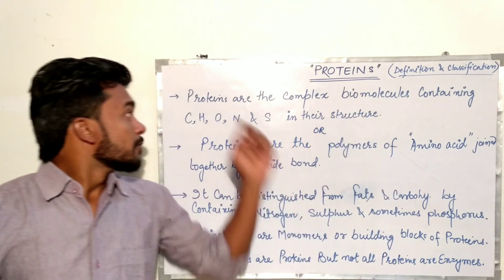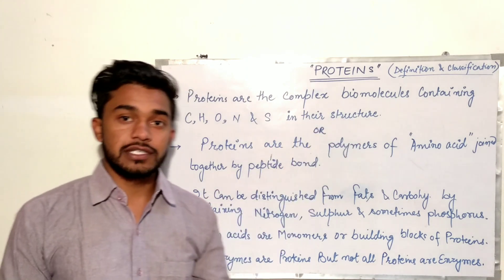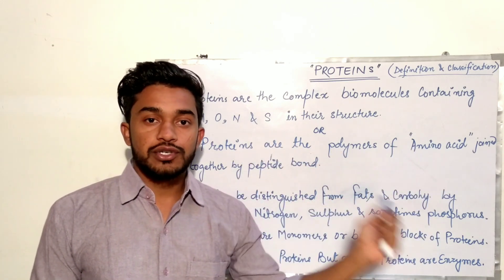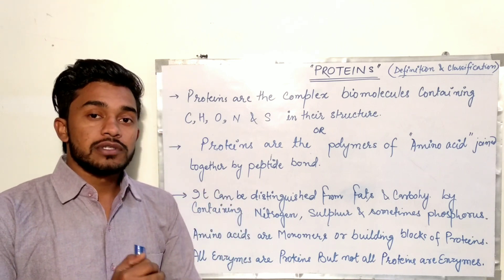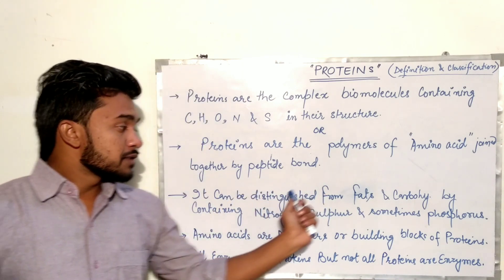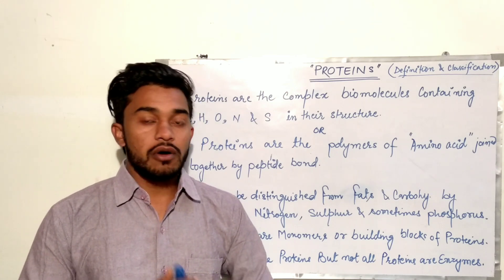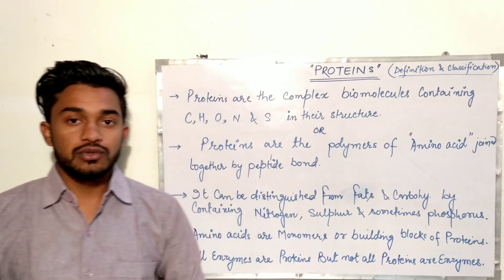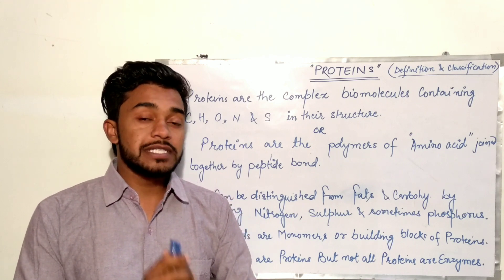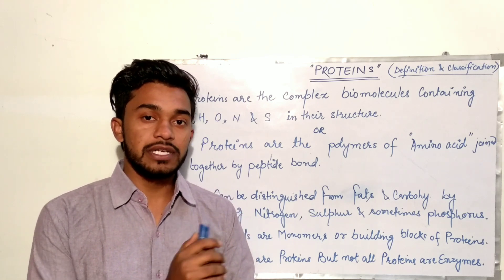What are proteins? Proteins are complex biomolecules containing carbon, hydrogen, oxygen, and sulfur in their structure — sometimes also phosphorus. Proteins are the polymers of amino acids joined together by peptide bonds. They can be distinguished from fats and carbohydrates because they contain nitrogen, sulfur, and sometimes phosphorus. In carbohydrates, carbon, hydrogen, and oxygen are present in a 1:2:1 ratio, but in proteins this ratio is different.